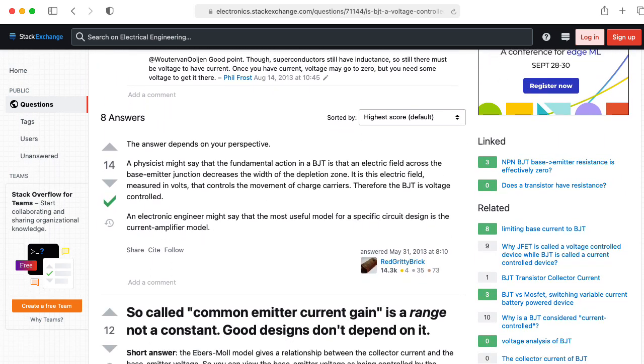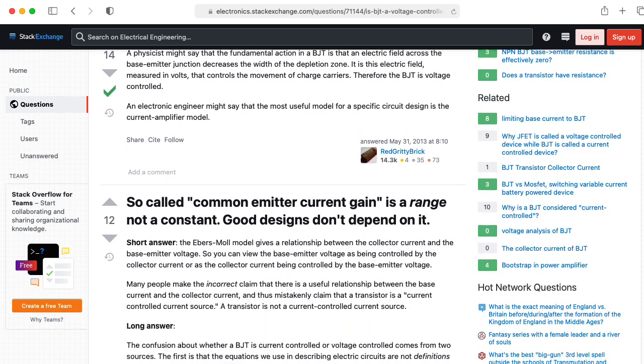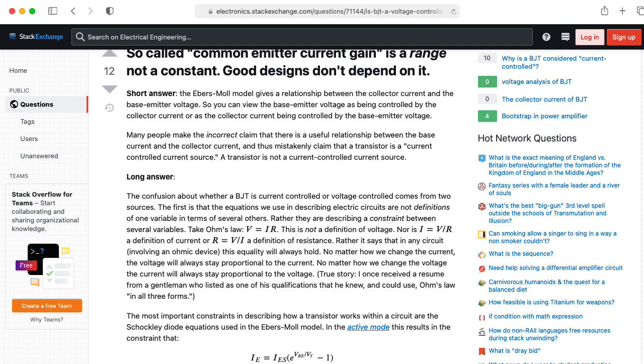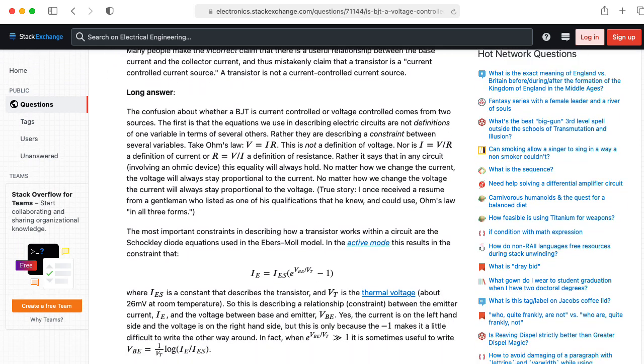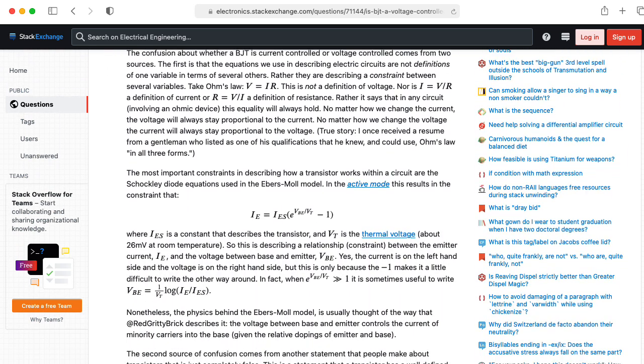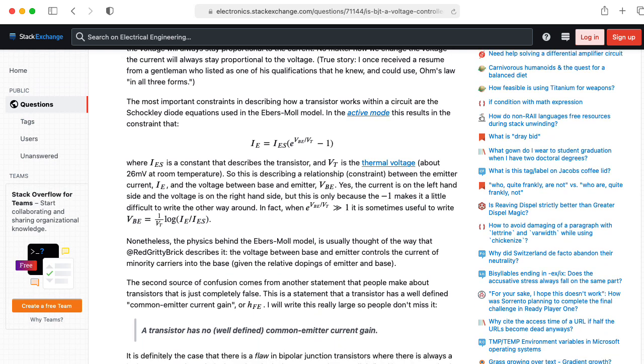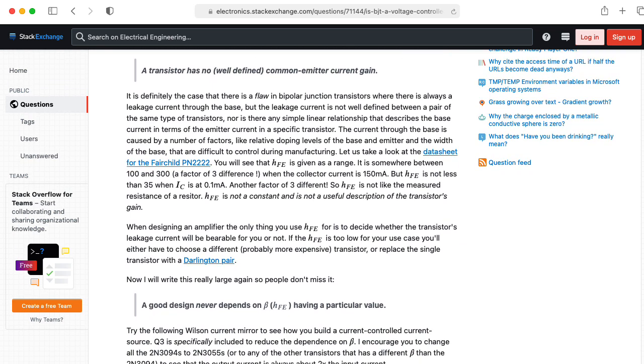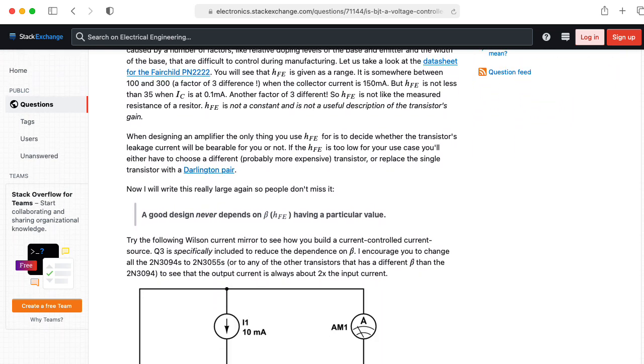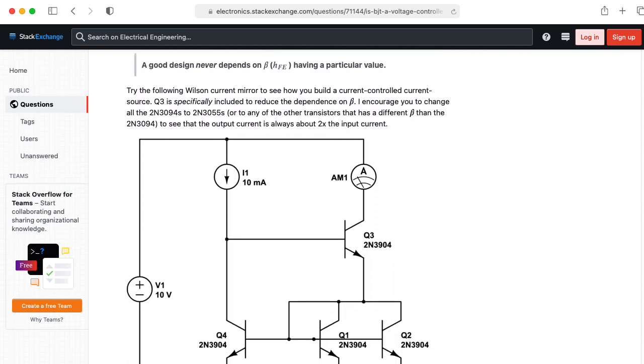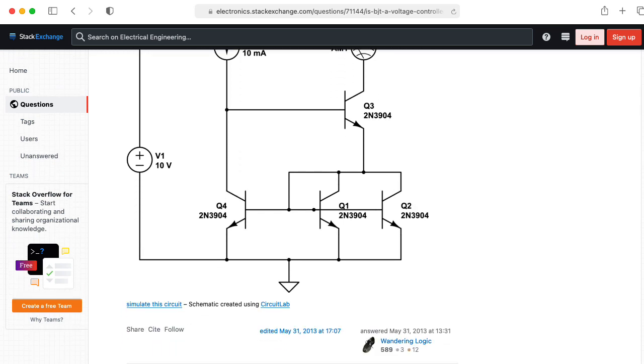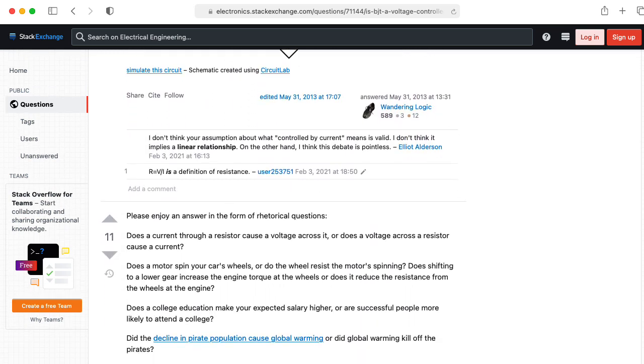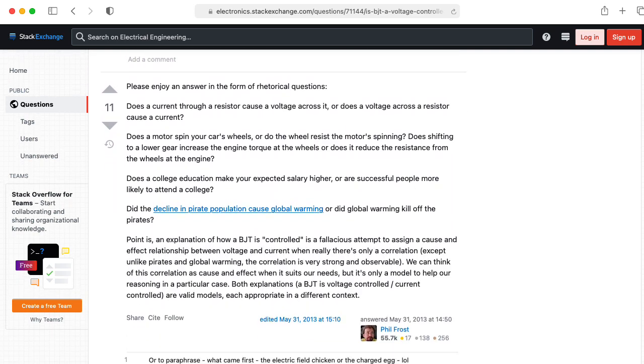So people will think about MOSFETs as voltage-controlled current sources, and they'll think about BJTs as current-controlled current sources. But I think it's really better when you're designing and analyzing circuits to think about BJTs as voltage-controlled current sources. Others might disagree with me. Yes, they're kind of amplifying current in terms of what's happening with beta, but that doesn't necessarily help you in thinking about the design.